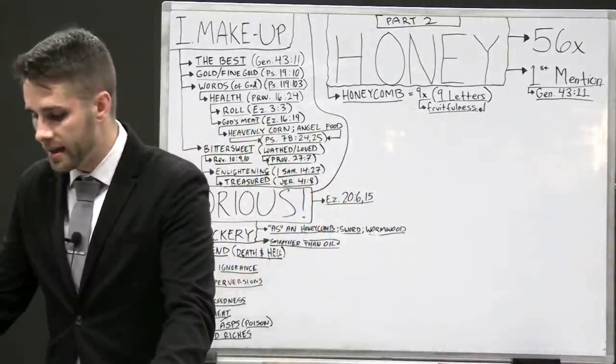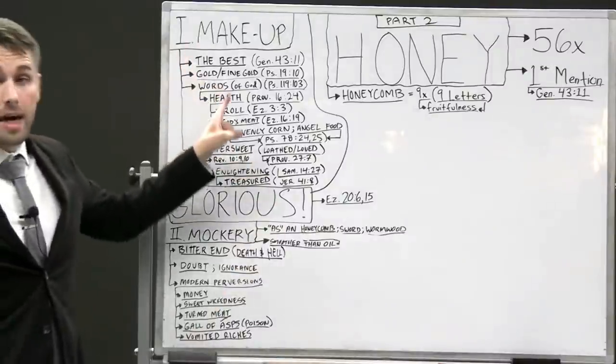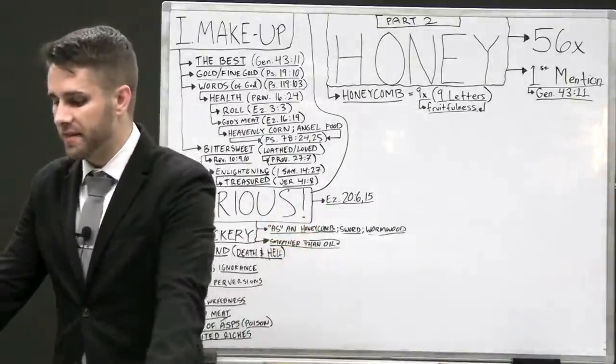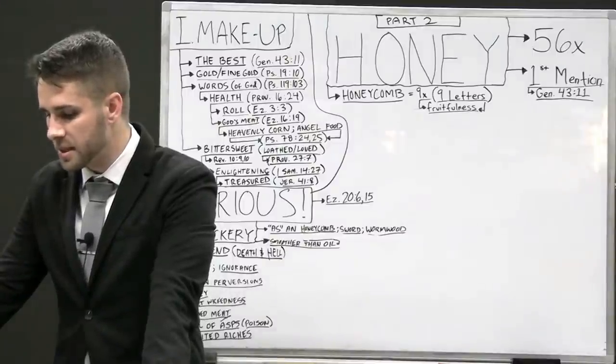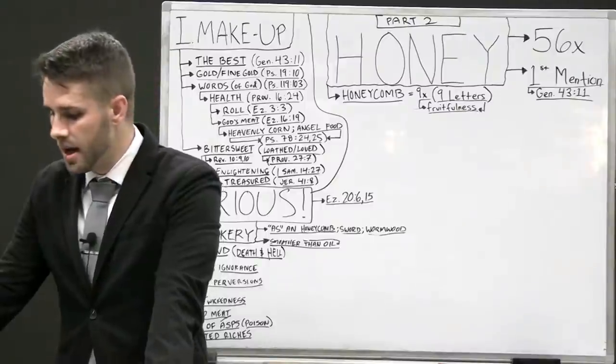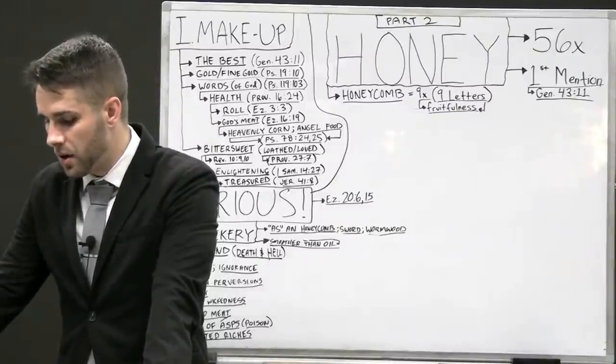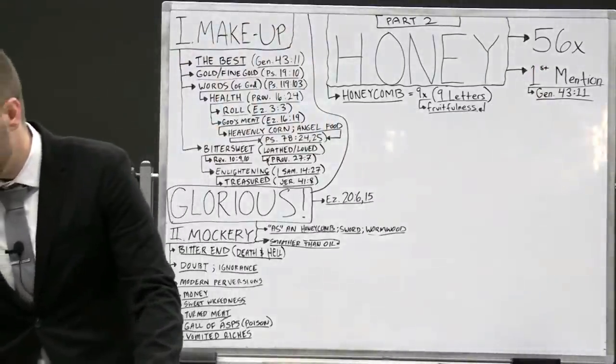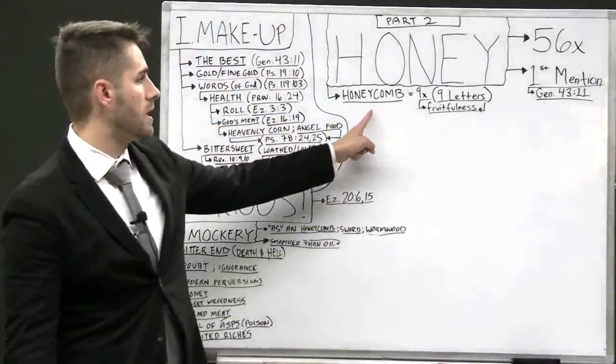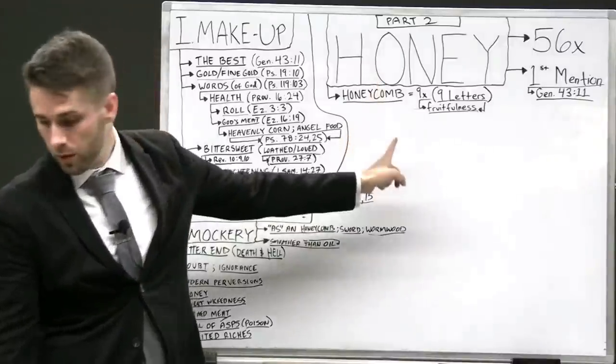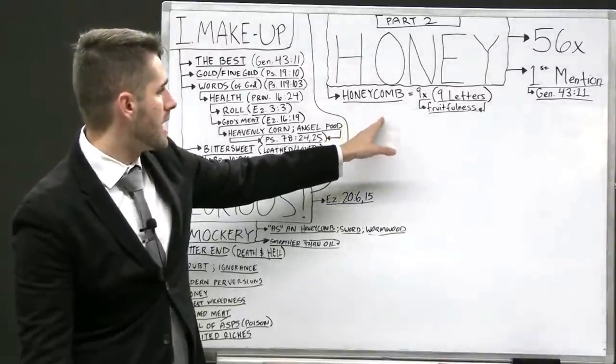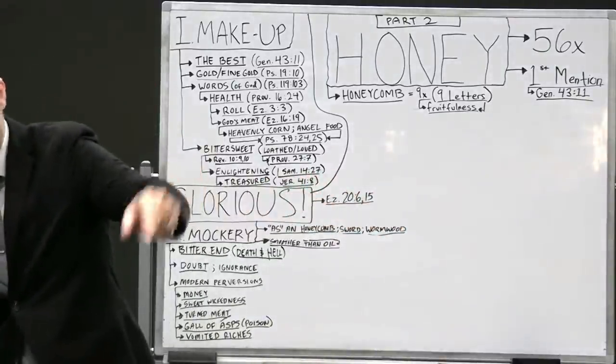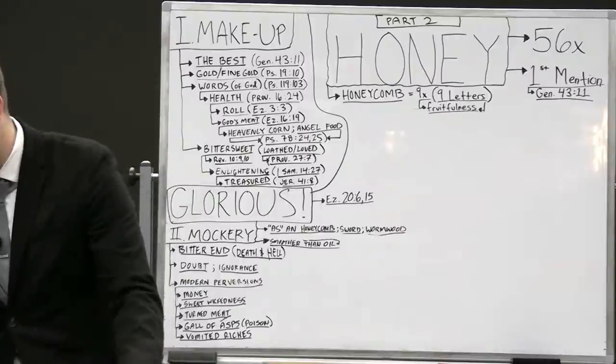So we looked at honey. We did a word study on honey. The first thing we looked at was the makeup of honey. The definition is it's a sweet vegetable juice collected by bees from the flowers of plants and deposited in cells of the comb and hives. But let's see what the Bible says about it. The word honey occurs 56 times in your King James Bible.